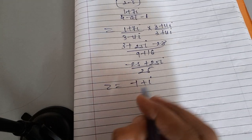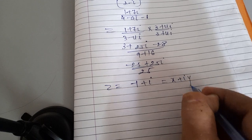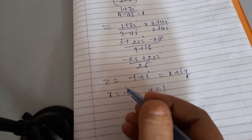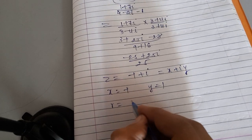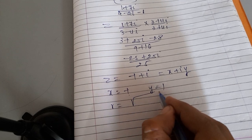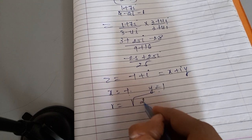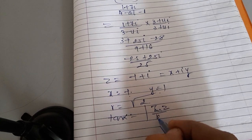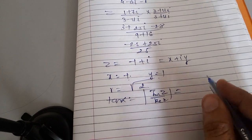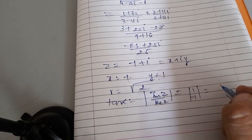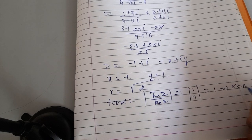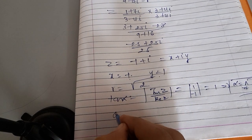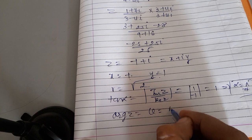Comparing z = -1 + i with x + iy, we get x = -1 and y = 1. The modulus R = √(x² + y²) = √(1 + 1) = √2. Then tan α = |Im(z)/Re(z)| = 1/1 = 1, which implies α = π/4. Since x < 0 and y > 0, z lies in the second quadrant, so θ = π - α = π - π/4 = 3π/4.